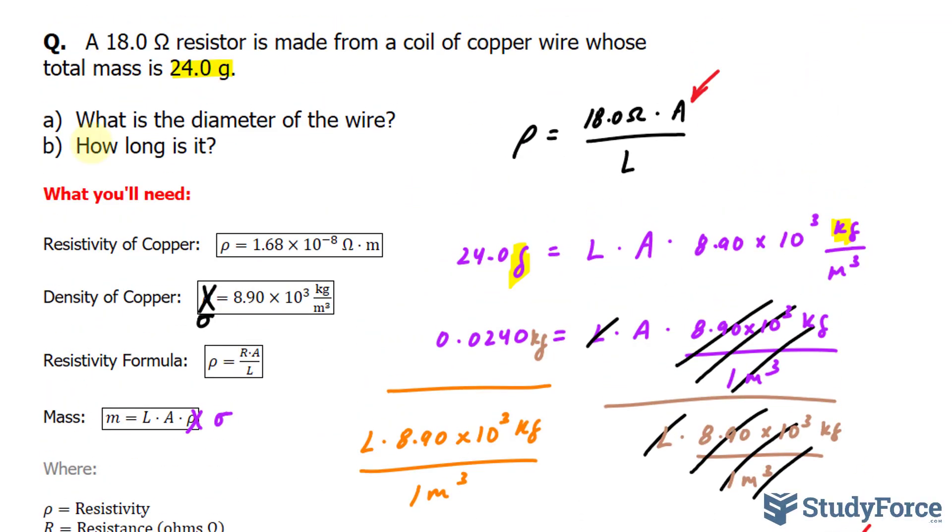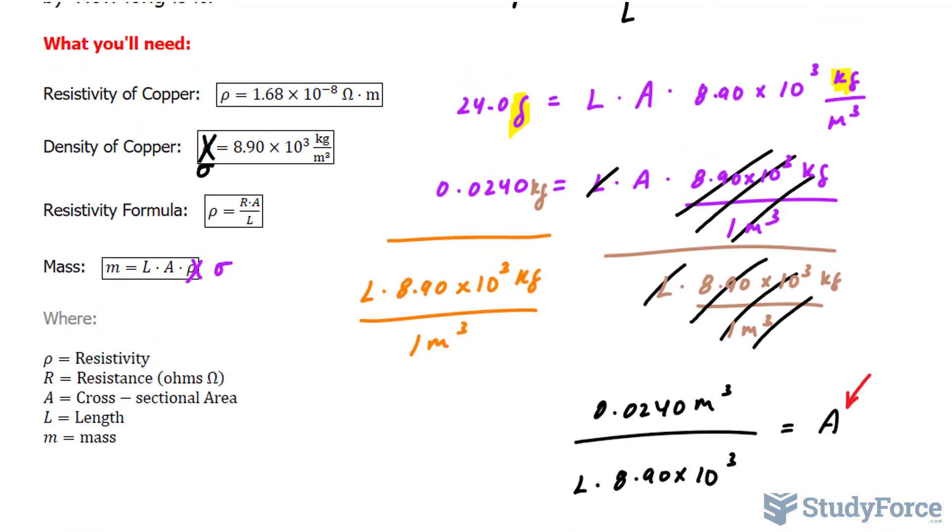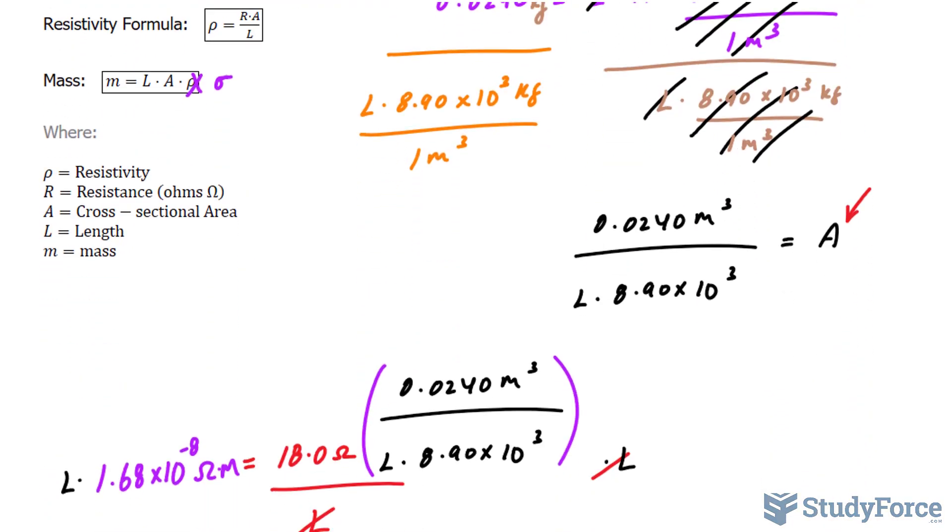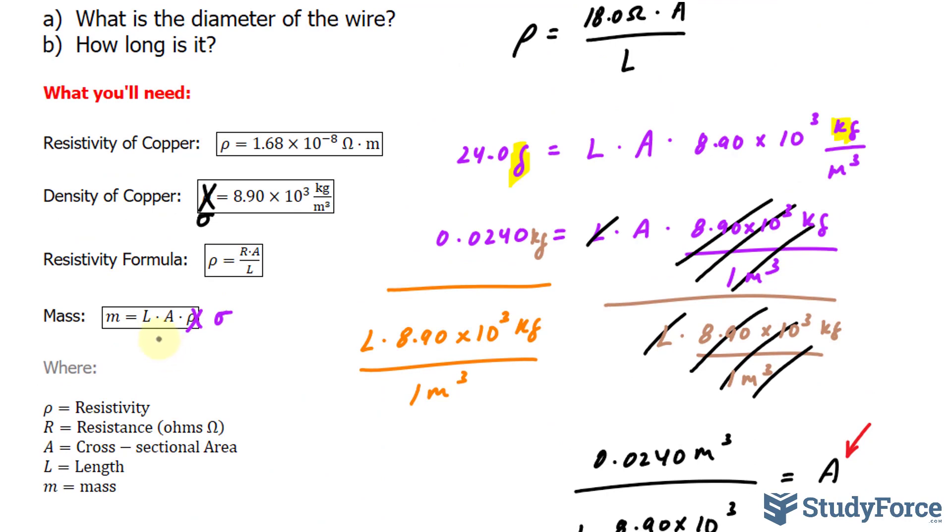What is the diameter of the area? Well, for that, I will use the relationship here. And we already filled this in earlier. We had the following filled in. So I'll substitute that value for L into here and solve for A.